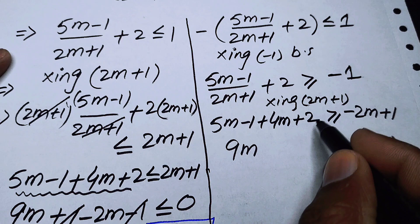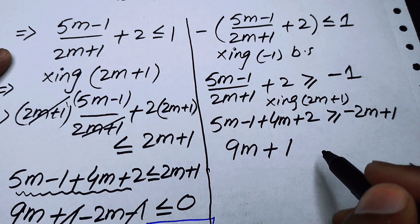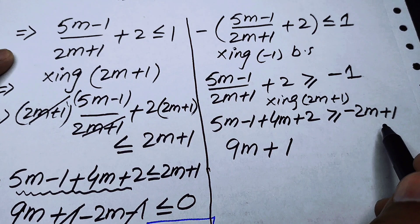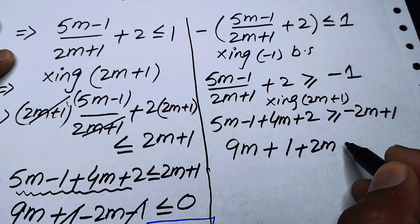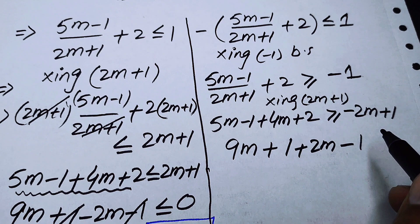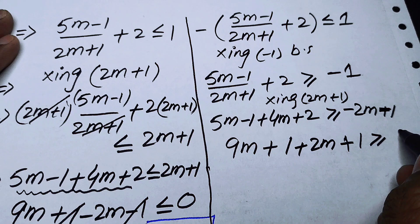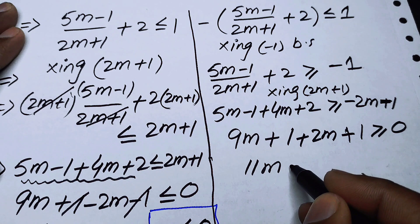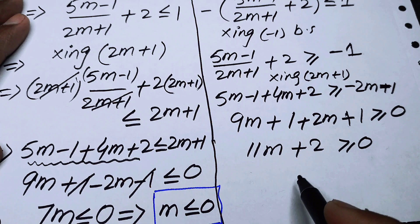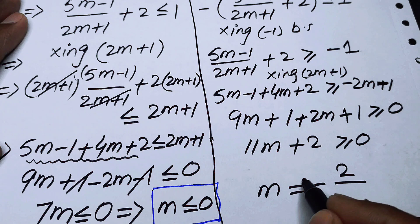Combining like terms on the left: 5m + 4m = 9m and −1 + 2 = +1, so 9m + 1 ≥ −2m − 1. Taking −2m − 1 to the left gives 9m + 2m + 1 + 1 ≥ 0, which is 11m + 2 ≥ 0. Finally m ≥ −2/11.